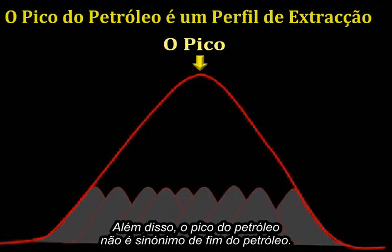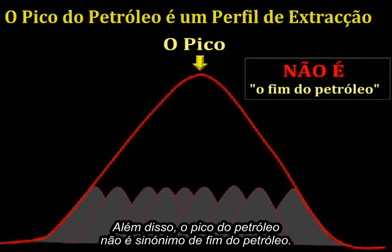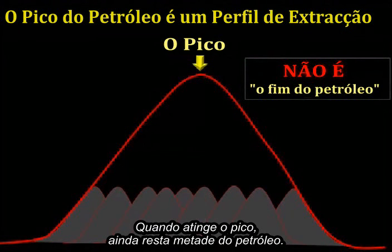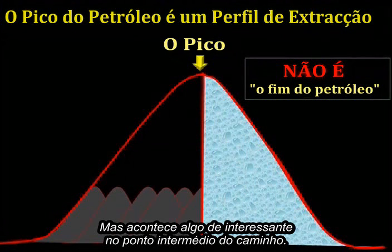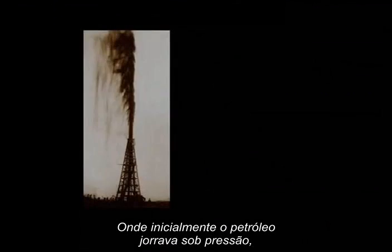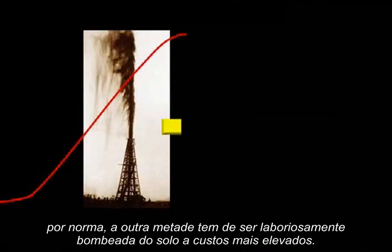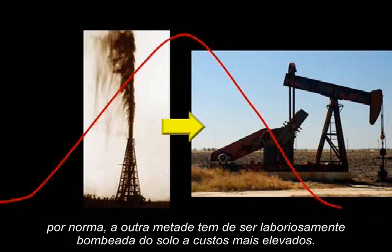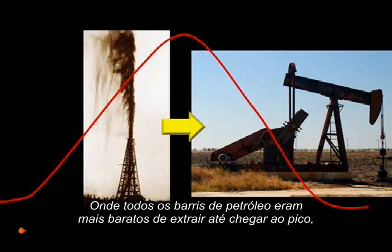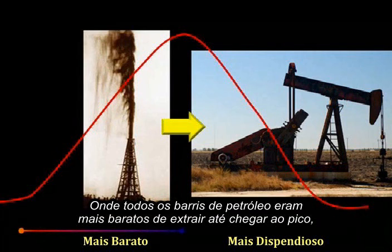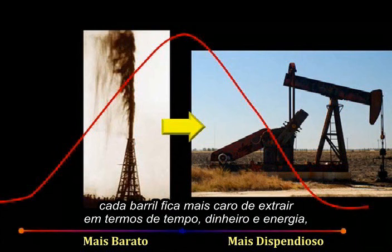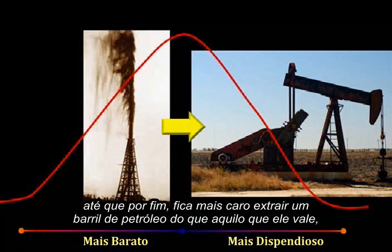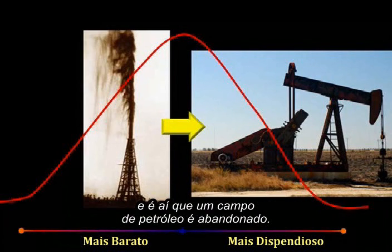Also, peak oil is not synonymous with running out of oil. At the moment of peak, somewhere right around half the oil still remains. But something interesting happens at the halfway mark. Where oil gushed out under pressure at first, the back half usually has to get laboriously pumped out of the ground at higher cost. Where every barrel of oil was cheaper to extract on the way up, the reverse is true on the way down. Each barrel becomes more costly in terms of time and money and energy to extract. Eventually, it costs more to extract a barrel of oil than it is worth, and that's when an oil field is abandoned.